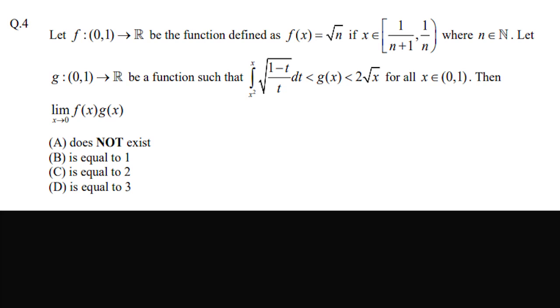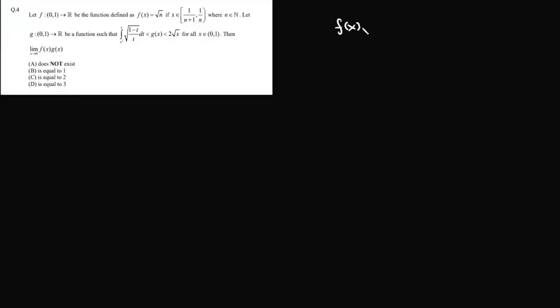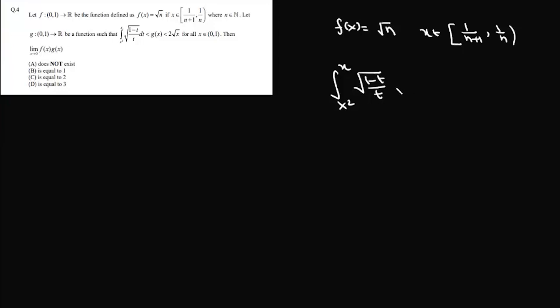In this fourth question, we are given a function f defined on [0,1] to ℝ, defined as f(x) = √n if x lies between 1/(n+1) and 1/n. There is another function g(x) satisfying the inequality: the integral from x² to x of √((1-t)/t) dt is less than g(x), and g(x) is less than 2√x for all x in [0,1].